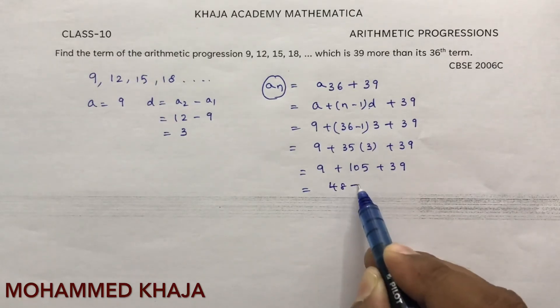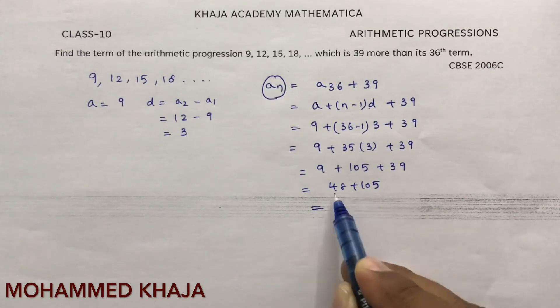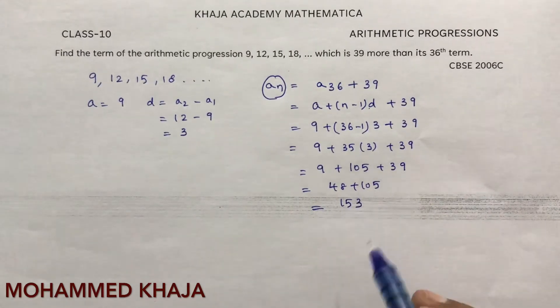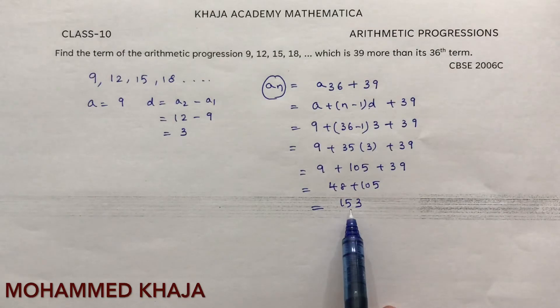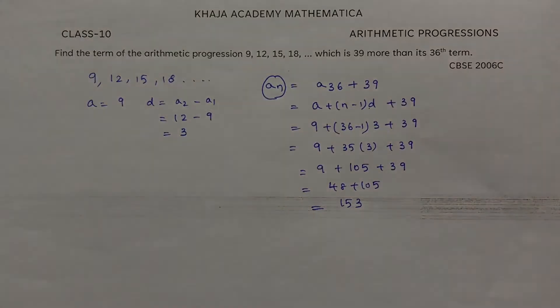Therefore, 153 is the term which is 39 more than the 36th term.